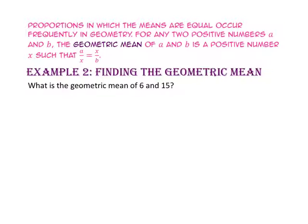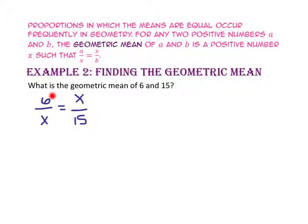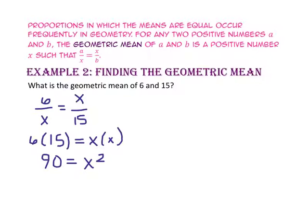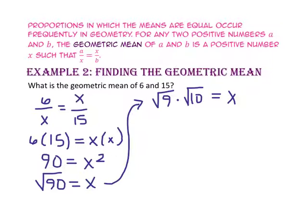Proportions in which the means are equal occur frequently in geometry. For any two positive numbers A and B, the geometric mean of A and B is a positive number X such that A to X equals X to B. For example 2, what is the geometric mean of 6 and 15? The geometric mean occurs twice as the means, while 6 and 15 are the extremes. Using cross product property: 6 times 15 equals X squared, so 90 equals X squared. Taking the square root, X equals the square root of 90, which simplifies to 3 times the square root of 10, or approximately 9.5.